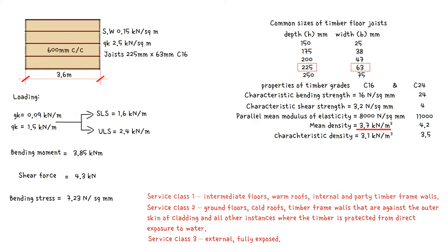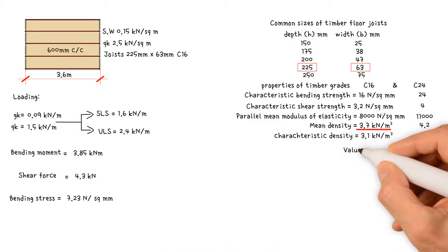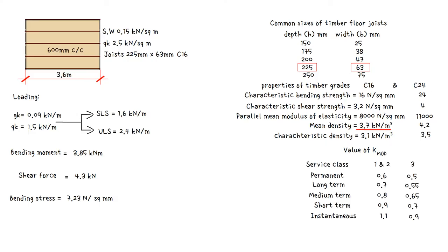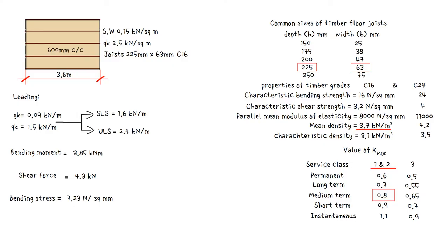The strength of a piece of timber is proportional to the duration of the load. The greater the duration of the load, the greater the strength of timber required to resist that load. To that end, a variety of factors are applied to the characteristic properties of the timber. The values for the factor KMOD, which is applied to the strength of the timber and is based on the imposed load duration, are provided in the table below. The imposed floor load combined with self-weight and superimposed dead load results in a KMOD value of 0.8, as the imposed load is defined as medium term.